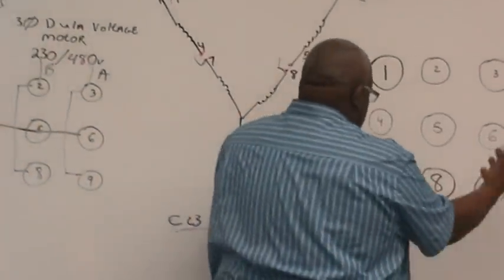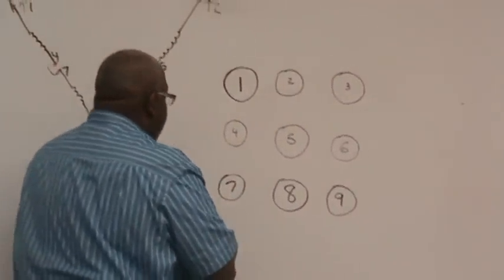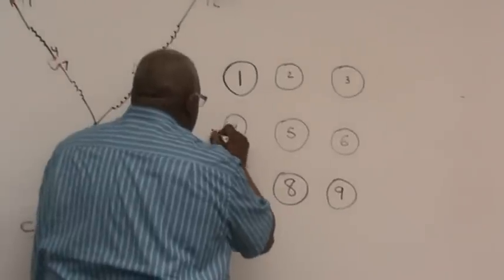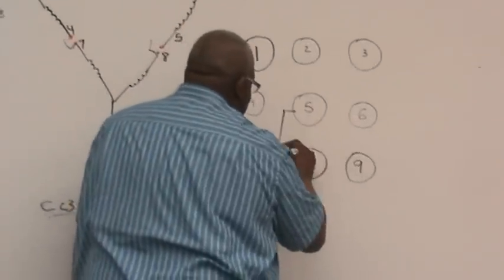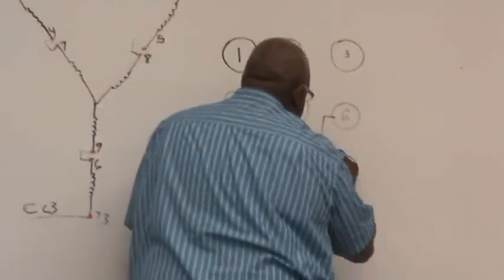When you look at it like this in groups of threes: four to seven, five to eight, and six to nine.